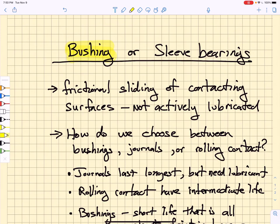Our last topic when it comes to supporting rotating shafts is the use of bushings or sleeve bearings. Bushings depend upon the frictional sliding of contacting surfaces. They are not actively lubricated, and so you can think of them as perhaps boundary layer lubricated or pure frictional sliding.